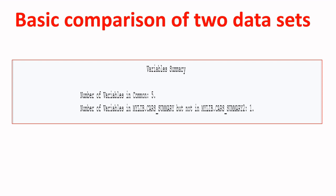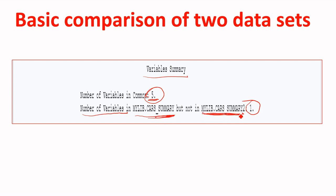The second section provides the Variable Summary. It tells you the number of variables in common — which is 5, since one data set had 6 variables and the other had 5. It also shows the number of variables in CARS_SUMMARY but not in CARS_SUMMARY2 — there was one variable available in the first data set but not in the second. This comprehensive information would be quite tedious to gather without PROC COMPARE.